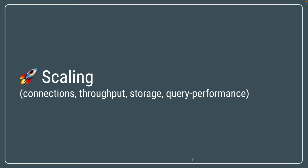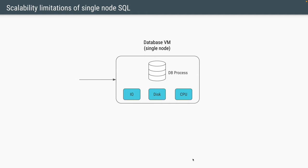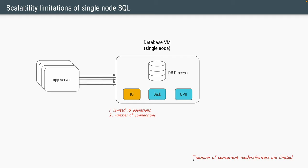Let's say our website becomes very popular and is being accessed by tens of millions of users. In this case, in the context of the database, there are a lot of problems we will face with scaling. Our database is generally just a process deployed on some virtual machine, and that virtual machine will have limited IO capacity, limited disk, and limited CPU. So let's say instead of a single application server we are horizontally scaling the number of servers to 100. If each of these servers has a connection pool with the database of 10, the database will have 1,000 active connections, which the virtual machine or database process might not be able to handle. Also, if tens of millions of users are concurrently accessing the database, there are a huge number of bytes being written and read, and a virtual machine might not have the capacity to support that many IO operations.